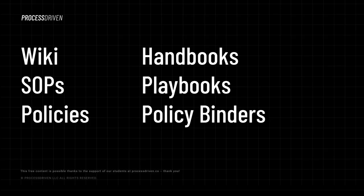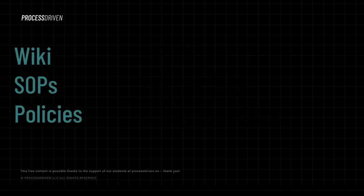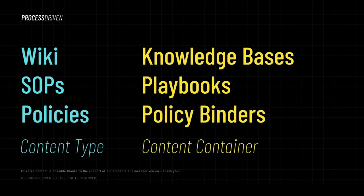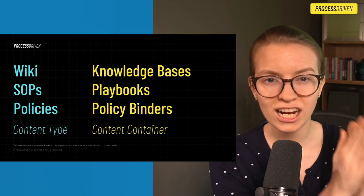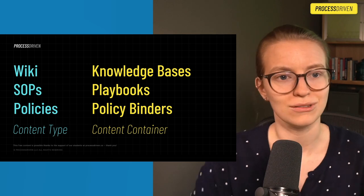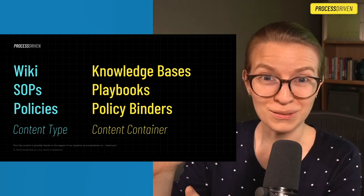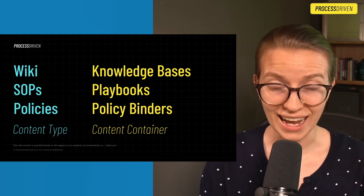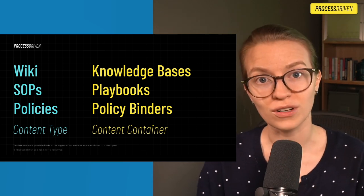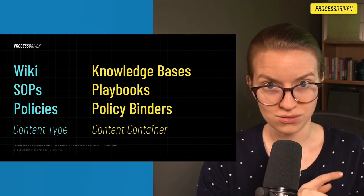The key thing to remember about these kind of jargony words is they fall into two broad groups: content types and content containers. We want to think about the blue side as being the actual original content types, whereas the yellow side, the right side, is really just referring to the containers or the different ways you can group the original types.